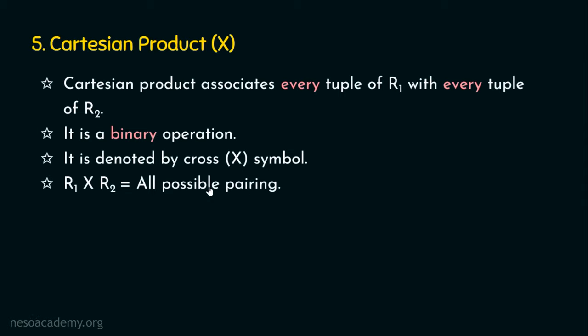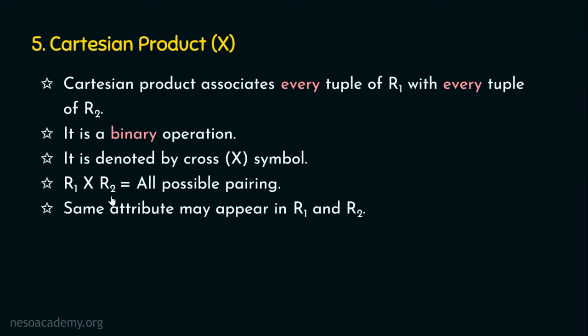Now, there is a problem here. Let's say relation one contains customer name as one of the attributes, and relation two also has an attribute which is customer name. In the Cartesian product output, we will have two customer name attributes — one from each relation. This leads to ambiguity, because the same attribute may appear in both R1 and R2, and the output relation will have both of these attributes.